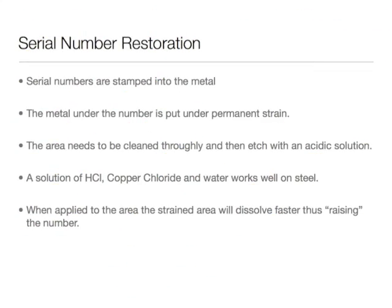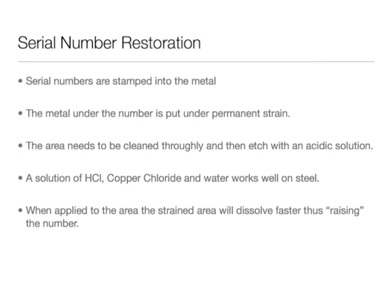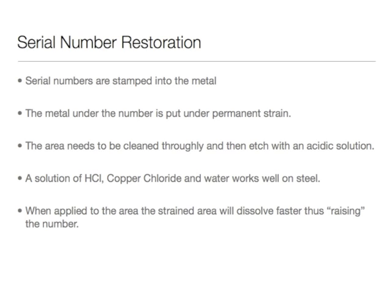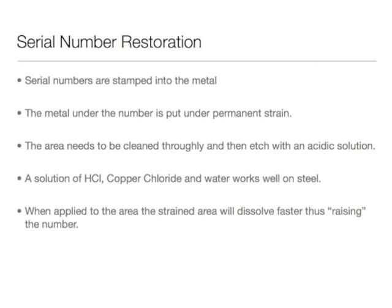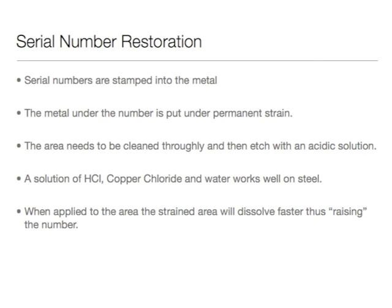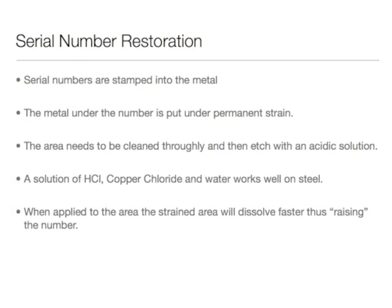Serial numbers are stamped into the metal. Under the metal, it creates a permanent stress strain. This strain can be raised by chemical means, usually by an acidic solution of hydrochloric acid, copper chloride, and water. This works well on the steel of the gun.